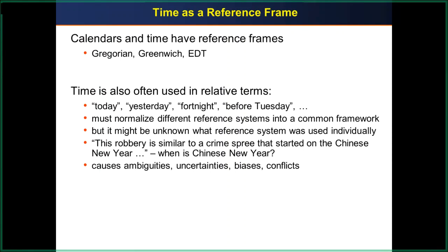Sometimes people use things like Chinese New Year, and you first have to understand what that actually means — when Chinese New Year is, as opposed to Western New Year, which is December 31st. Chinese New Year changes every year — sometimes February — and this causes ambiguities, because you don't know which New Year it was. If someone just says 'New Year' without specifying, you have no idea. That causes uncertainties and conflicts.